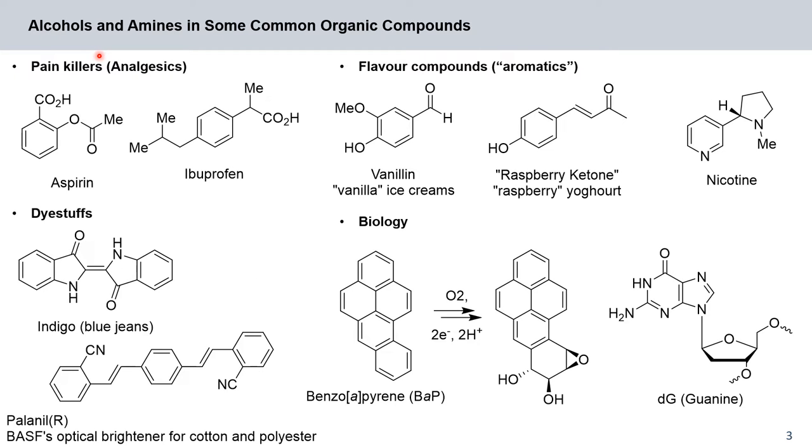Carbonyl compounds that you have met at the beginning of this course, as well as alcohols and amines are omnipresent. So you will find them in pain canals or so-called analgesics, in anti-inflammatories like aspirin or ibuprofen. You will also find them in flavor compounds, so-called aromatics, like for example vanillin and raspberry ketone, two artificial flavor compounds which you will find in ice creams or in yogurts. You see that these functional groups play some important roles here.